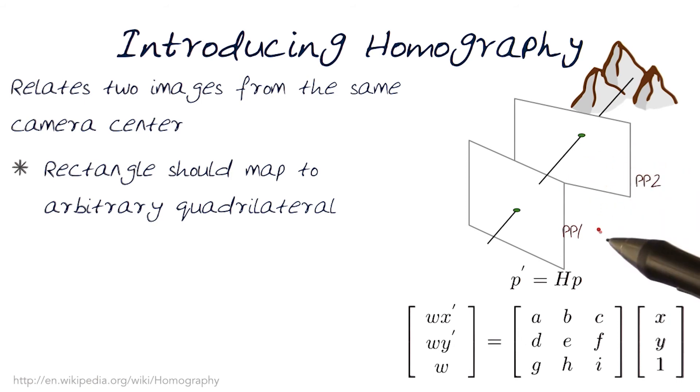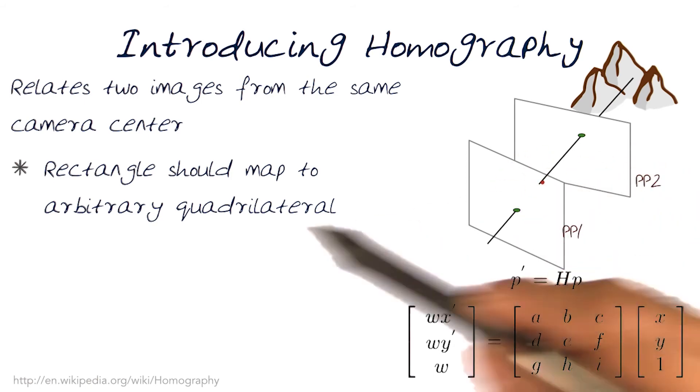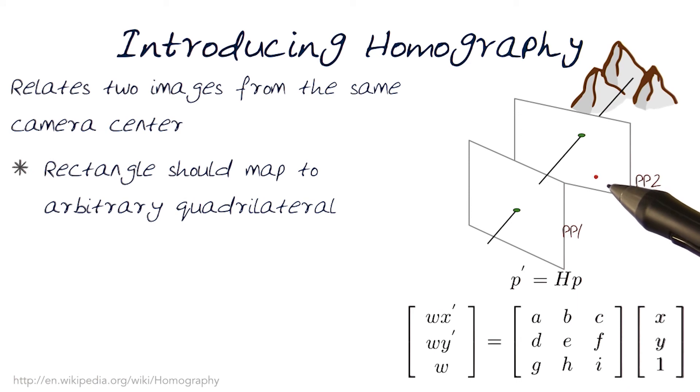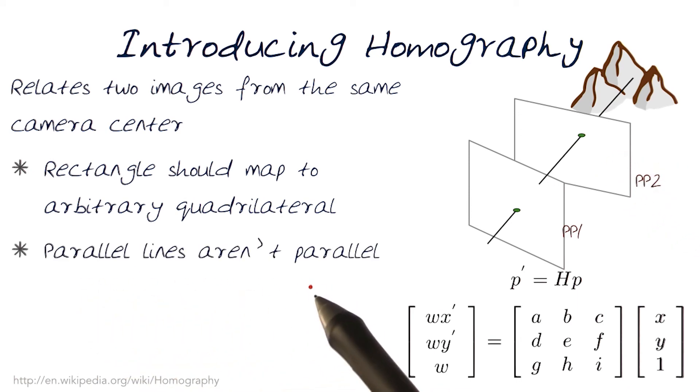The shape of this region might change, but overall it'll remain a quadrilateral. It'll have straight lines. Parallel lines won't be parallel, but lines will remain straight.